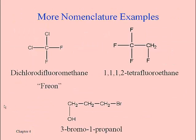Here are some other examples. Freon on the left side is an old trade name for dichlorodifluoromethane, used for many years as the refrigerant in air conditioners. Notice that with two different halogens they are placed alphabetically in the name — C for chloro comes before F for fluoro. Iodo would come after fluoro, and if this molecule had a bromine that would be mentioned first.